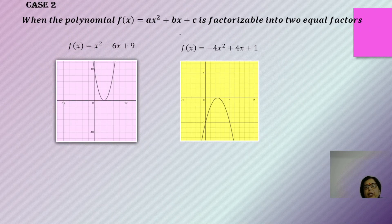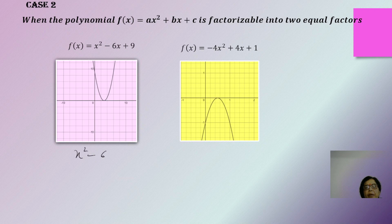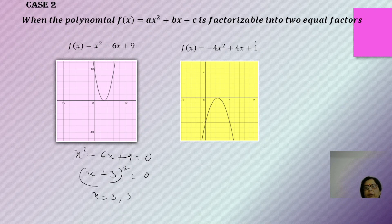Moving on, when a quadratic polynomial can be factorized into two equal factors. For example, x² - 6x + 9 = 0 is a perfect square: (x - 3)² = 0, giving x = 3 and 3. Both zeros are the same, so the graph touches the x-axis at only one single point.